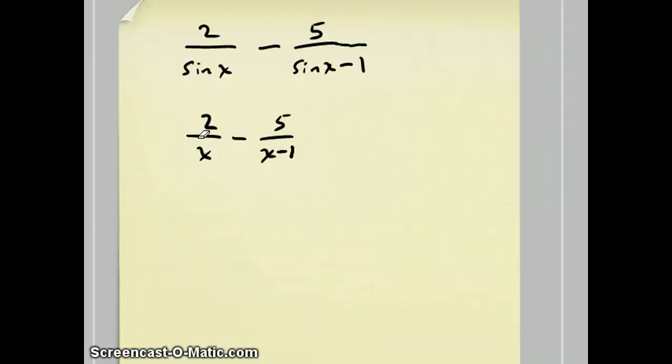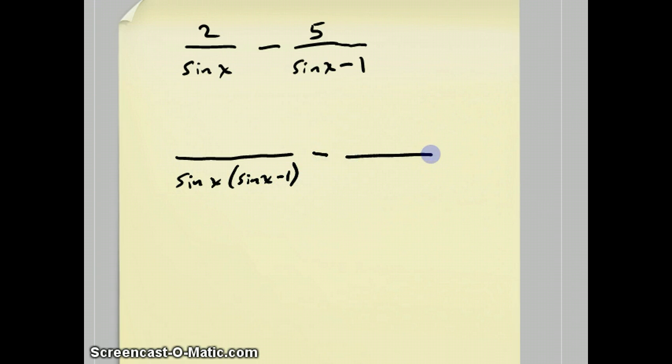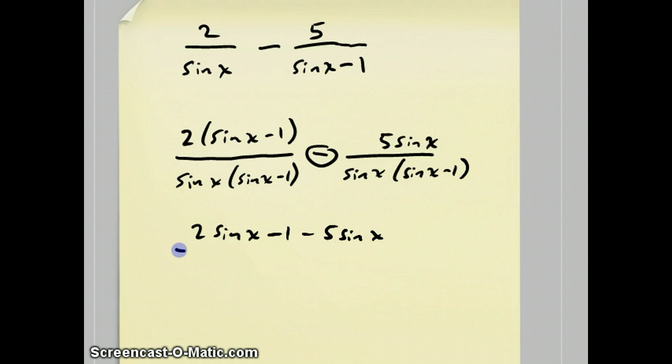I'm going to now move on to the situation we have here, where, again, these things don't have any common factors. So, I'm just going to multiply them together. So, the common denominator is going to be sine x times sine x minus 1. The new numerator is going to be 2 times sine x minus 1. And then the new numerator here is going to be 5 times sine x. Sometimes when there's a negative here, you've got to be real careful. If this thing was more complicated, you have to distribute it through, but not in this case. 2 sine x minus 1 minus 5 sine x over sine x times sine x minus 1.